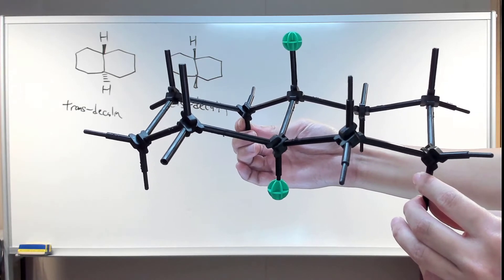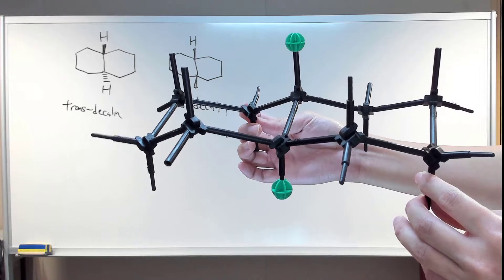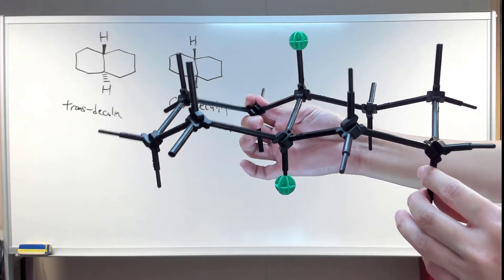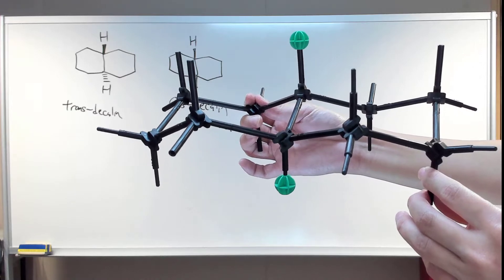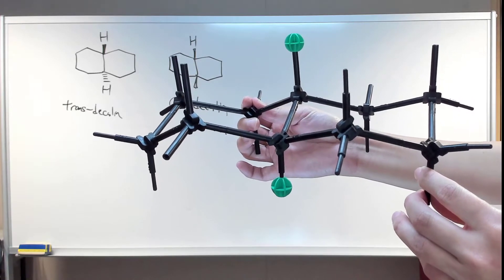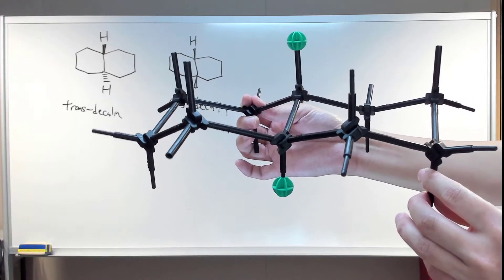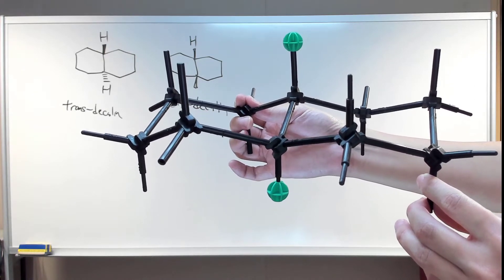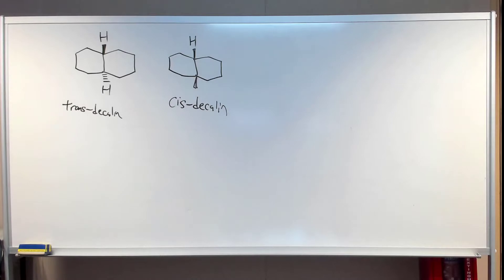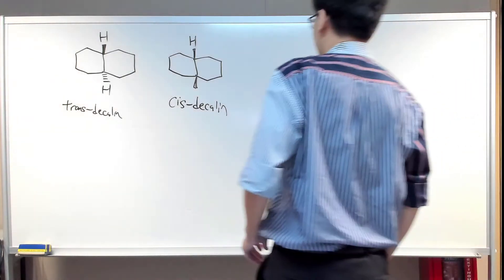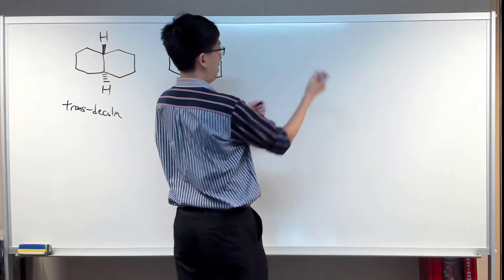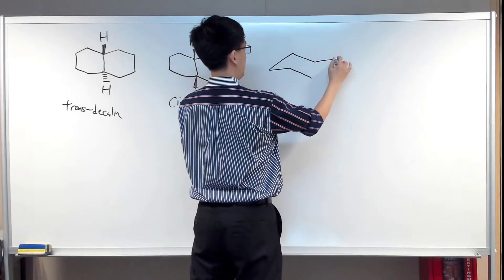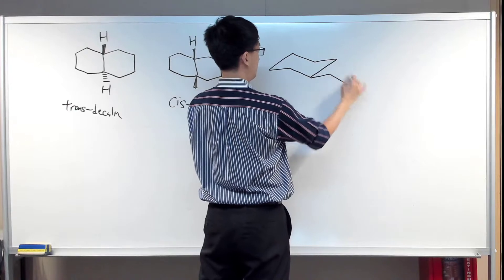I'm going to maintain the model here for a while — attempt to draw it to the best of your ability before I show you on the board. Now I'm going to draw it on the board. You can see a chair conformation like this, and then I'm going to join them up with another chair conformation.